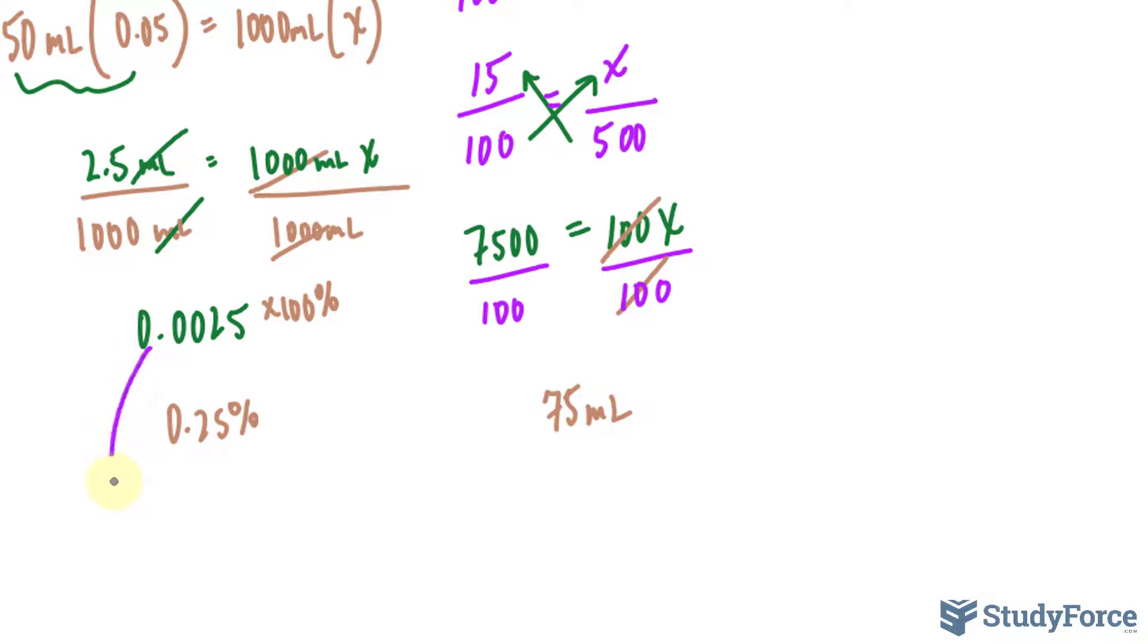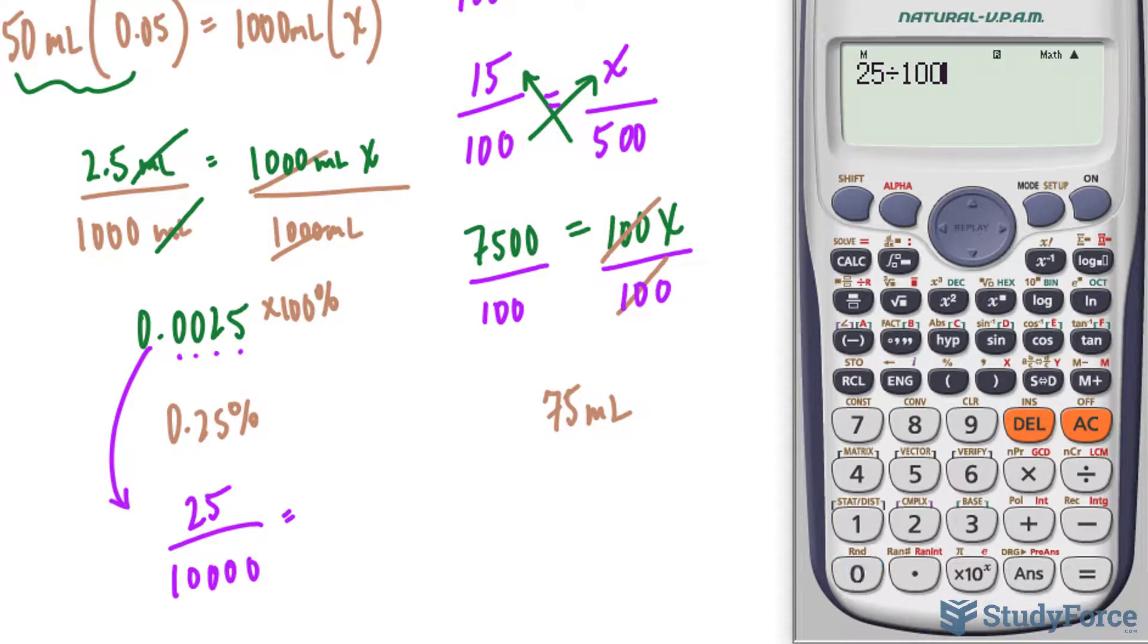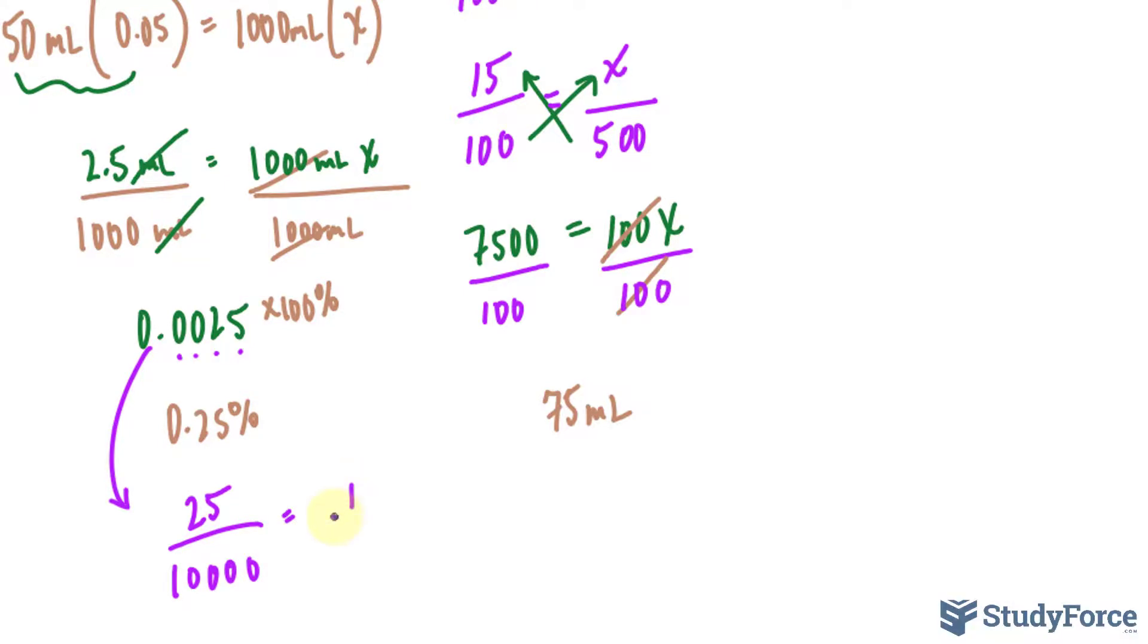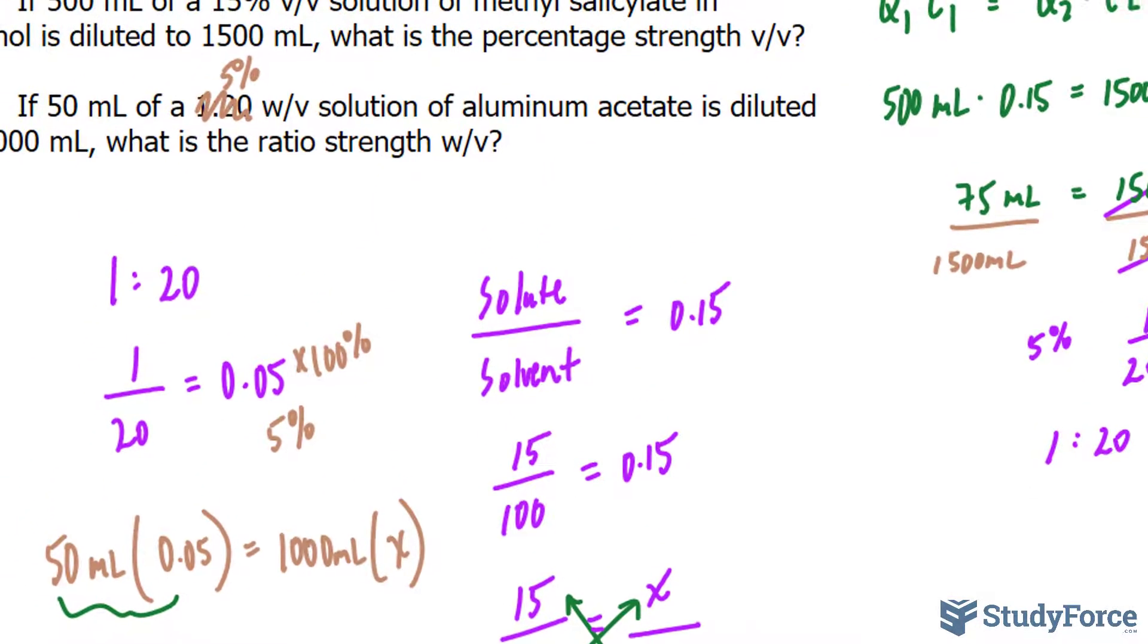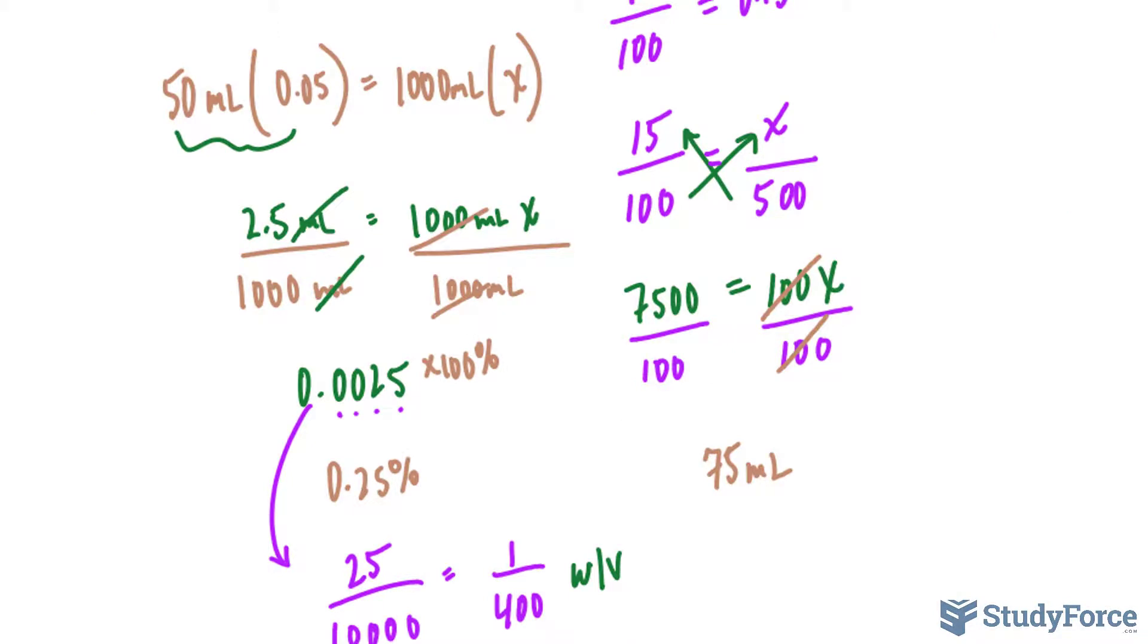And you can also represent this as a fraction in case they ask you for a ratio. How do we convert 0.0025 into a fraction? Well, since there are four numbers after the decimal place here, you can write down this value of 25 over 10,000. The four numbers after the decimal place where the number ends represents the amount of zeros at the bottom. And reducing this down 25 over 10,000 leads you to 1 over 400. So you can also write down 1 over 400 weight per volume in case they ask as a ratio. And they do. So that's the answer for question two.